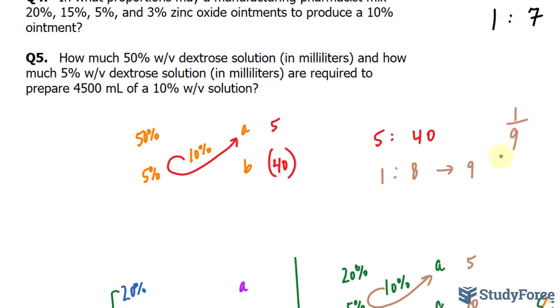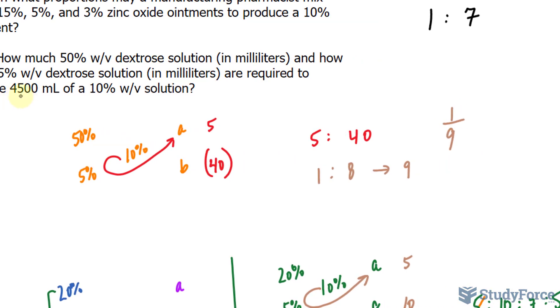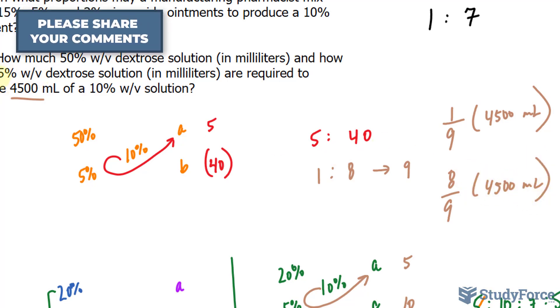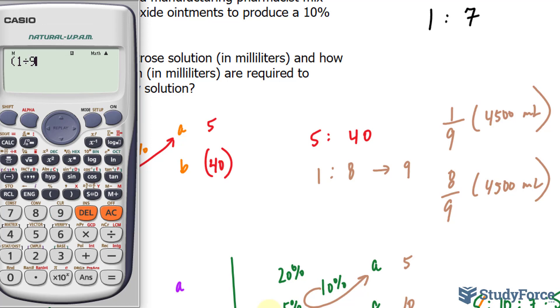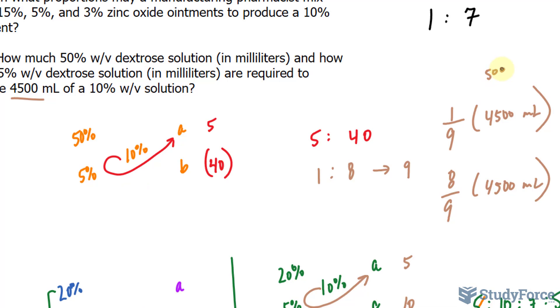So 1 out of 9 of the entire solution of the entire 4,500 milliliters will be coming from the 50%. And 8 out of 9 of the entire solution will be coming from the much weaker one, the 5%. So I'll multiply 1 over 9 times 4,500, and that means we need 500 milliliters of the 50%, and the rest will be of the 5%, which will be 4,000 milliliters.